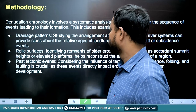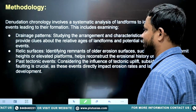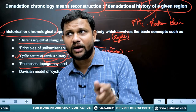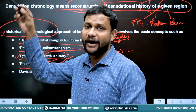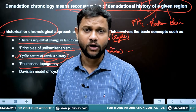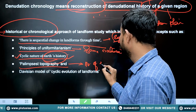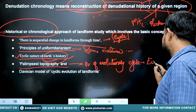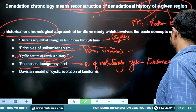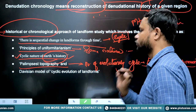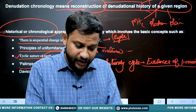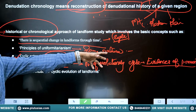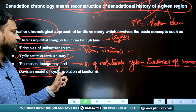The fourth founding principle is palimpsest topography. This refers to topography that has formed, vanished, formed again, and vanished again — going through a number of different evolutionary cycles. This topography holds evidence, though blurred, of the processes and cycles it went through. Such topography, where evidence of numerous geological processes can be found, is known as palimpsest topography.